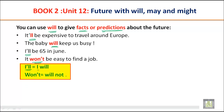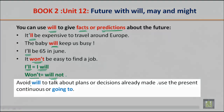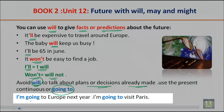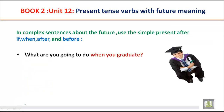Note the contractions: 'I'll' for 'I will', and 'won't' for 'will not'. Also, avoid using will to talk about plans or decisions already made. If you have already made a plan, use the present continuous or 'going to': for example, 'I'm going to join the medical course next semester' or 'I'm going to Europe next year.'